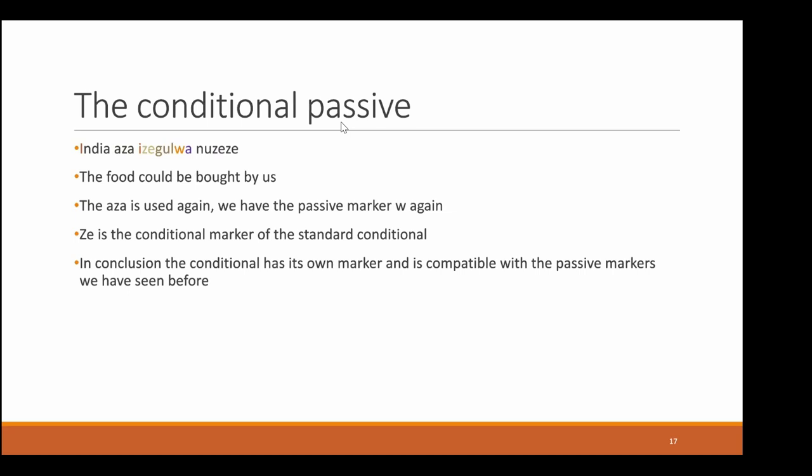For the last topic, we're going to look a little bit into the conditional passive. The sentence is 'india asa izeguva nu zese,' which means 'the food could be bought by us.' Here again we have ASA as part of the passive, W as the passive marker, and ZE is the conditional marker of the standard conditional. In conclusion, the conditional has its own marker ZE, which is compatible with the passive marker we have seen before. In total, we have a verb which has all the functions of the passive and the conditional combined. Verbs in Nihanzu work like puzzle pieces — we build them together using the different functions and different markers.